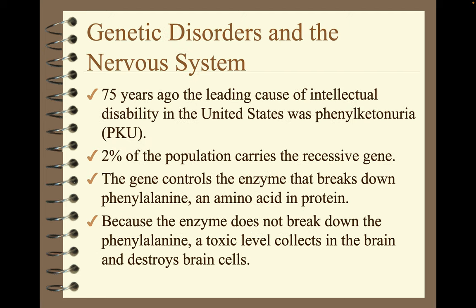75 years ago, the leading cause of intellectual disability in the United States was phenylketonuria, also known as PKU. Two percent of the population carries the recessive gene. The gene controls the enzyme that breaks down phenylalanine, an amino acid in protein. Because the enzyme does not break down the phenylalanine, a toxic level collects in the brain and destroys brain cells — that is phenylketonuria.